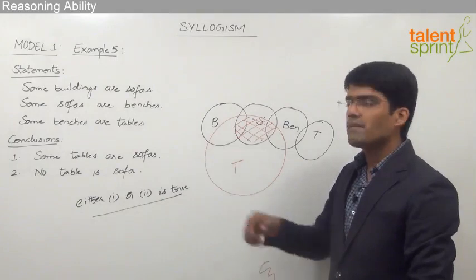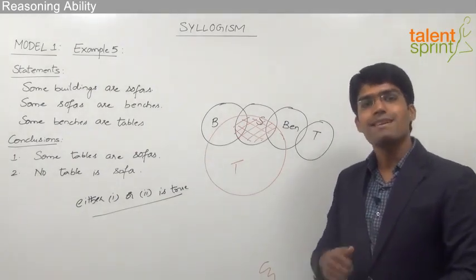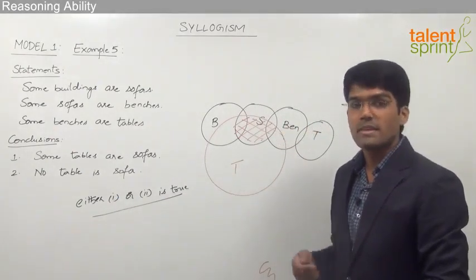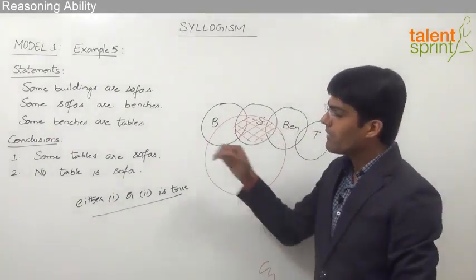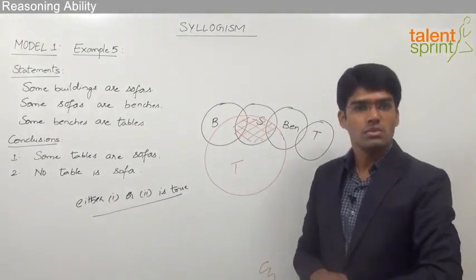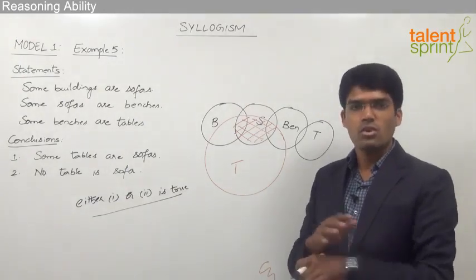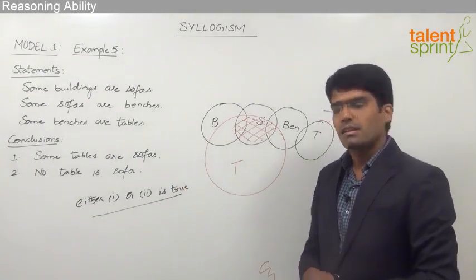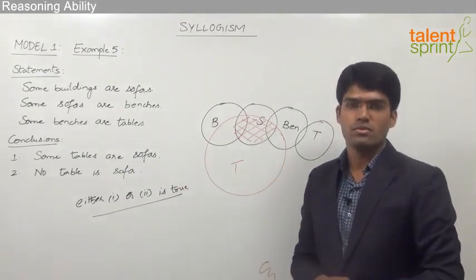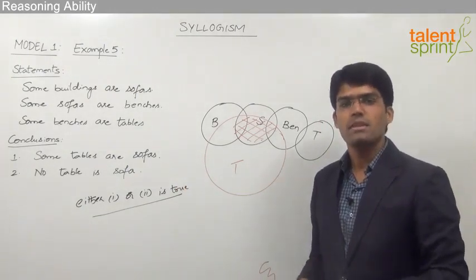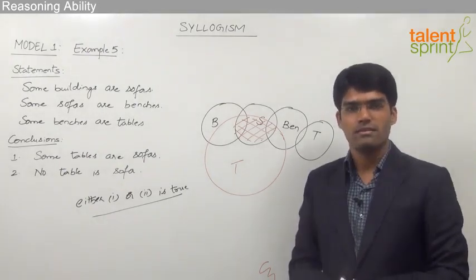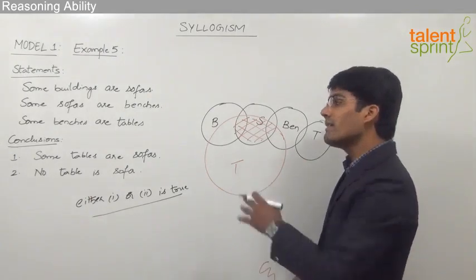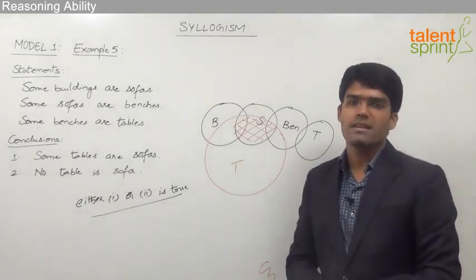Remember: just because the given conclusions make a complementary pair does not mean the answer will always be 'either one or two is true'. In some cases, only one of the conclusions may be true and the other false. So do not take it for granted — we always have to check with all possible diagrams and only then determine which of these conclusions are definitely true.